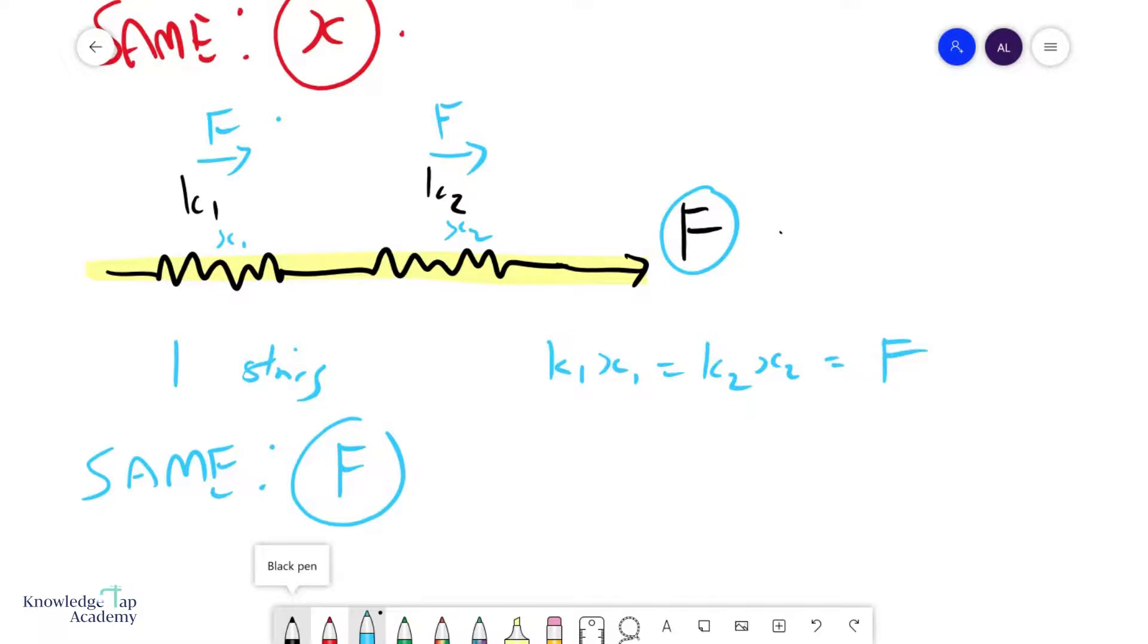And so if now I try to think of an overall spring constant, then f equals some k effective. The total extension will be the combined extension of these two things. f equals k effective times x1 plus x2.